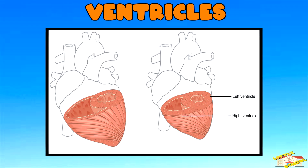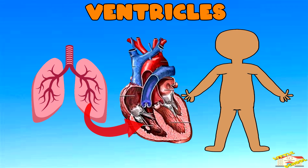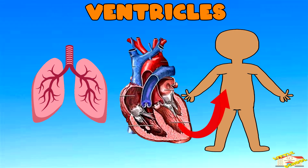Ventricles — right and left ventricle. The ventricles are the two lower chambers of the heart. They pump blood out of the heart. The right ventricle sends deoxygenated blood to the lungs to pick up oxygen, and the left ventricle pumps oxygen-rich blood to the entire body.